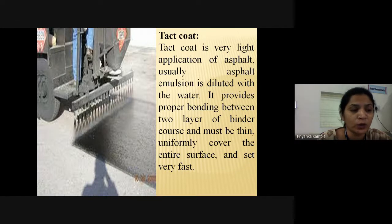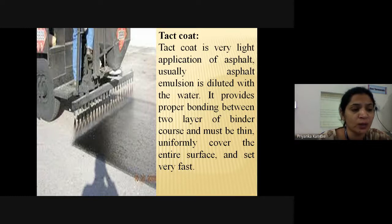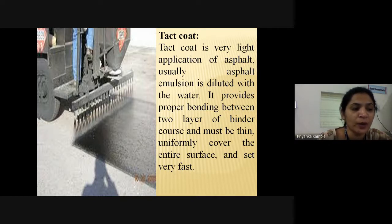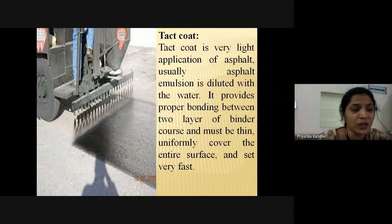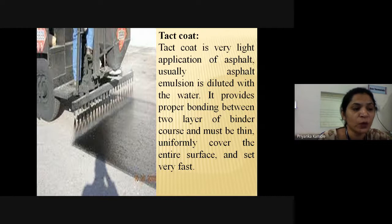Poor tack coat bonding can cause pavement fatigue cracking. The tack coat is an adhesive material applied between layers of asphalt concrete laid for road construction; when applied correctly, it prevents degradation by keeping the asphalt concrete layers together. A prime coat is an application of asphalt cutback or emulsified asphalt to a prepared base, while a tack coat is used for gluing two asphalt layers together. A tack coat is a thin bituminous liquid applied between pavement lifts to promote bonding.